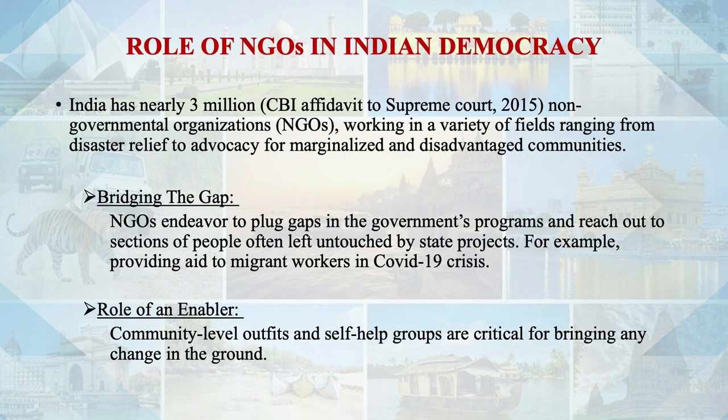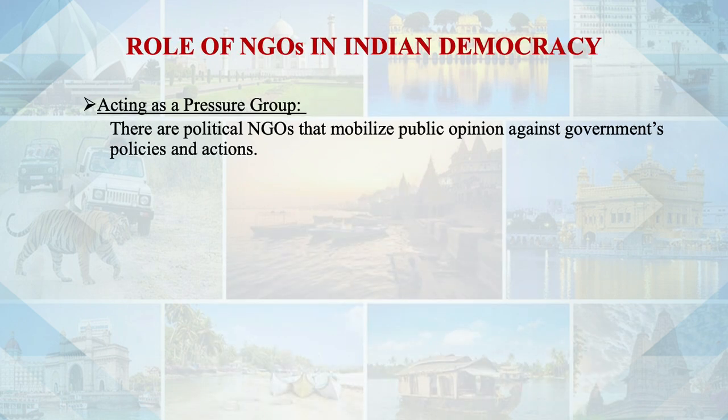They act as enablers. Community level outfits and self-help groups are critical for bringing any change on the ground. In the past, such grassroots organizations have been enabled by collaborations with bigger NGOs and research agencies that have access to foreign funding. Acting as a pressure group, there are political NGOs that mobilize public opinion against government policies. To the extent such NGOs educate the public and put pressure on public policy, they act as important pressure groups in democracy.